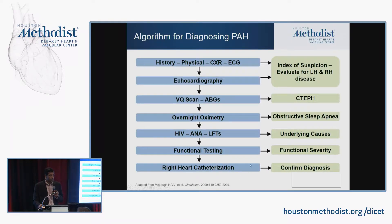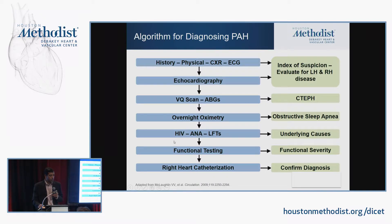To make sure it's not WHO Group 3 due to lung disease, get PFTs and a CT of the chest. Also look at other risk factors for WHO Group 1 PAH, which include HIV, ANA, and LFTs.